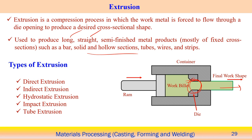There are many types of extrusion process: direct extrusion, indirect extrusion, hydrostatic extrusion, impact extrusion, and tube extrusion. Overall, the basic elements of an extrusion process include a die container, a die, and the work piece material. Maximum deformation occurs at the die opening, and the compressive load is applied by the RAM on the work piece material.